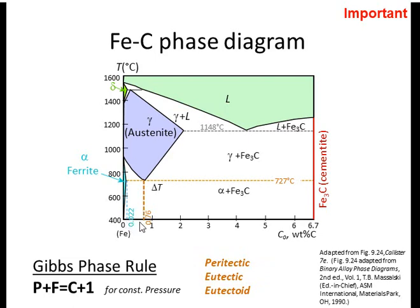Steels in the region of 0.2 to around 0.3% carbon are the ones used as structural steels in buildings, bridges, and ships. Steels greater than 1% carbon are used in razor blades, cutlery, and other sharp applications. Above 2.1% to around 6.7% carbon, these are cast irons, which usually contain silicon as an additional alloying element because it is a graphite stabilizer. Cast iron is also used in many industrial applications.